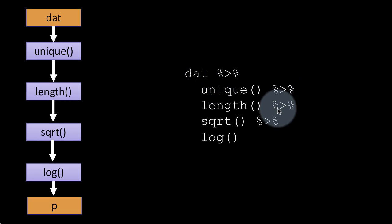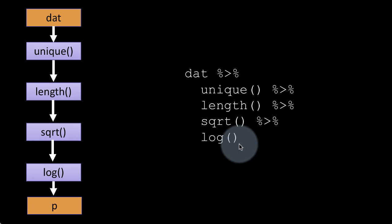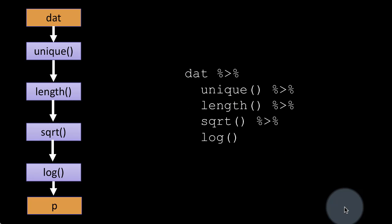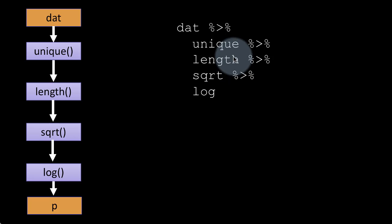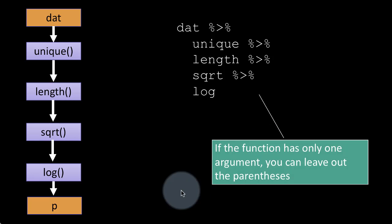Now if you look at this code, the moment you see the pipe signs, you know things are happening in a pipeline — that takes away a lot of complexity. The sequence is exactly as you read it: take dat, run it through unique, take the result, run it through length, then sqrt, then log. If you want to assign it to p, you can say p <- dat %>% unique() %>% length() %>% sqrt() %>% log(). When a function has no other arguments, you can even leave out the parentheses, though I don't personally prefer that.